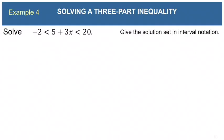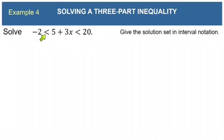Here is our first three-part inequality, also called a compound inequality — it's like two inequalities mashed into one. The expression 5 plus 3x must be less than 20 and greater than negative 2 simultaneously. Reading left to right: negative 2 is less than 5 plus 3x, which is less than 20. So 5 plus 3x is stuck between negative 2 and 20.